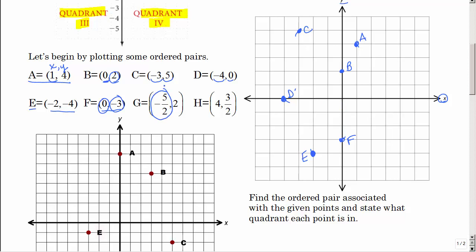Point F: don't go side to side, just go down three. Now you might ask, how do I plot a fraction? Negative five over two — two goes into five two times with one left over, so it's negative two and a half. That means go left two and a half, then up two. You'll be in the middle of two squares — that's okay.